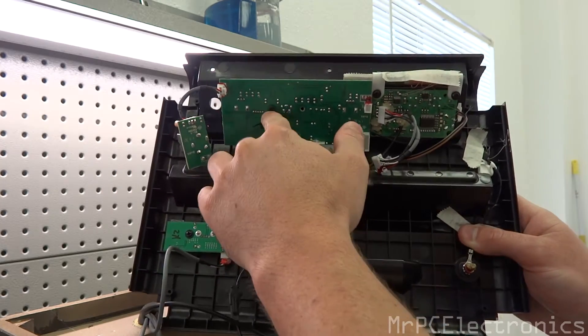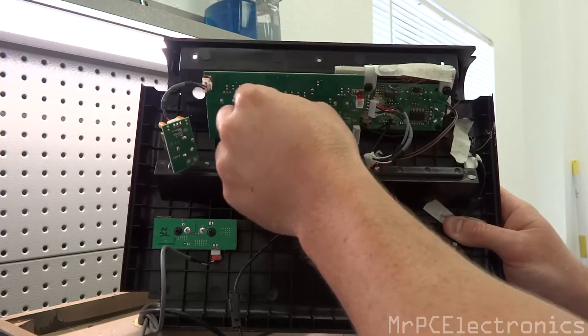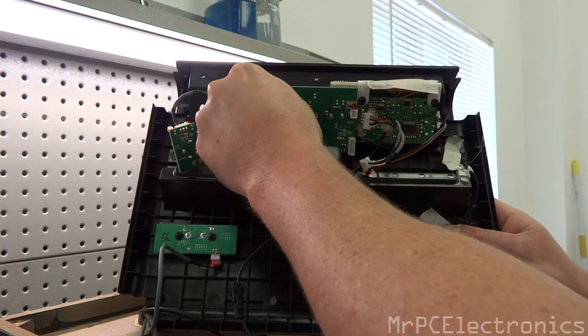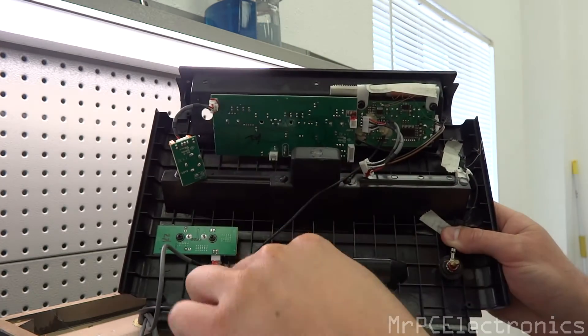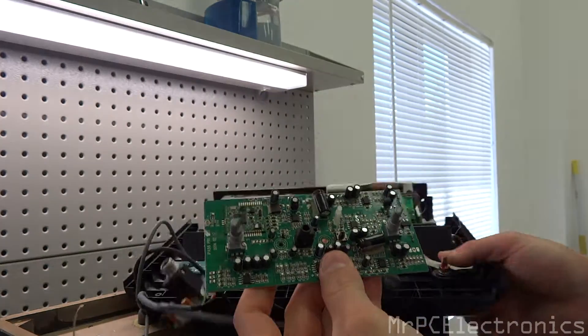Then you're going to have two screws right here, and this is the board we're going to want. So take these two screws out, and this is the control board right here.